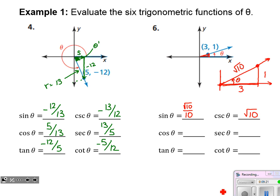Cosecant is the reciprocal. Cosine is 3 over root 10, or rationalized as 3 root 10 over 10. Secant is its reciprocal: root 10 over 3. Tangent is rise over run: one-third. Cotangent is its reciprocal: three over one. I really hope we start to tie those terms — opposite, adjacent, hypotenuse — into x's, y's, and r, the radius being made as we spin this point around the origin.